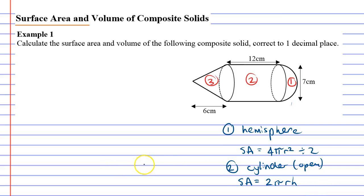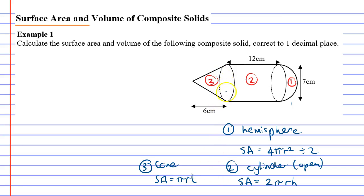The third shape is a cone, and the cone formula is surface area equals πrl. Quite often the formula includes plus πr² at the end, but we don't need it because there is no circular base on this cone. So we've got our three formulas and we'll do one at a time.